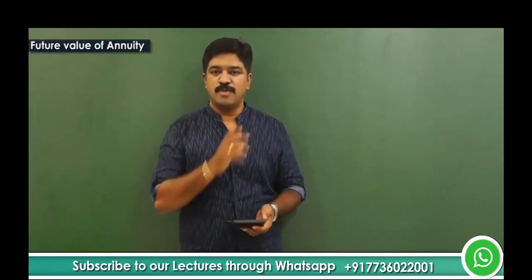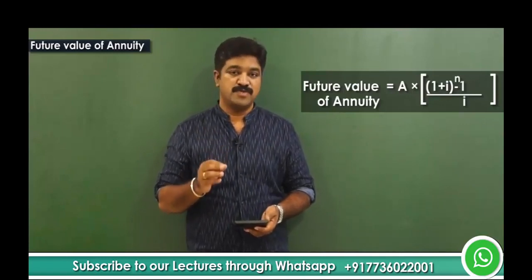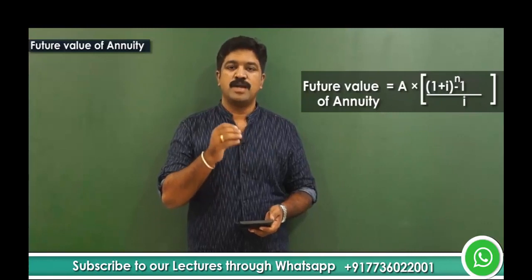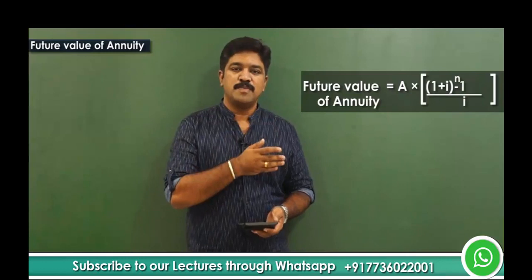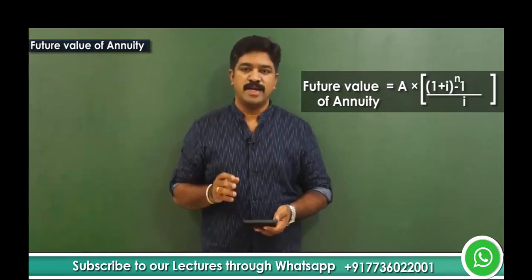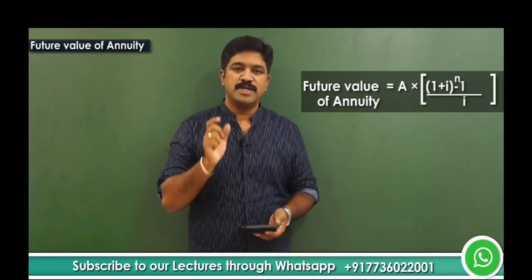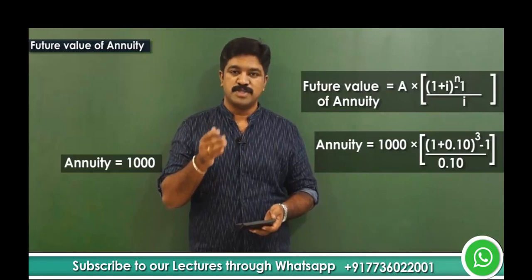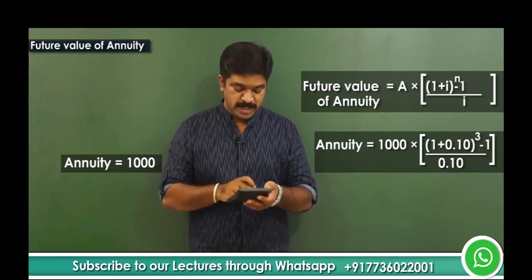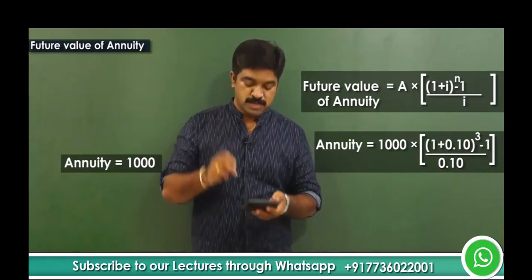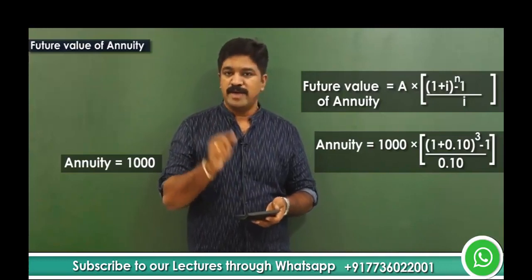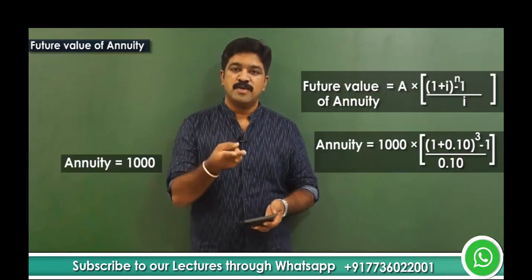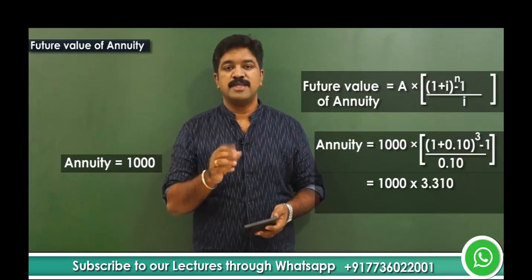Now let's find the same result using the formula. The future value of annuity formula is: FV = A × [(1 + i)^n − 1] / i, where A is the annuity amount. Here A is 1000, i is 10% (0.10), and n is 3. So: 1.10 raised to the power 3 equals 1.331; minus 1 gives 0.331; divided by 0.10 gives 3.31. Then 1000 multiplied by 3.31 equals 3310.